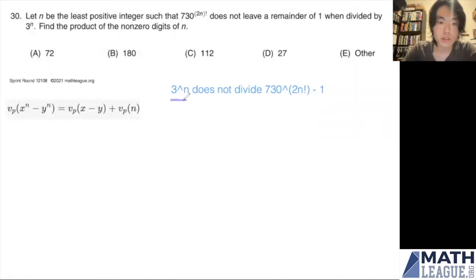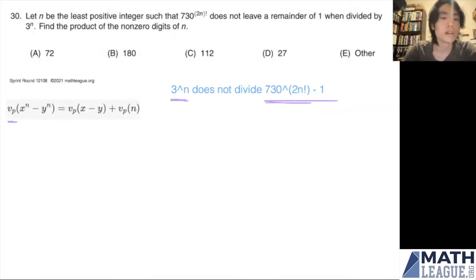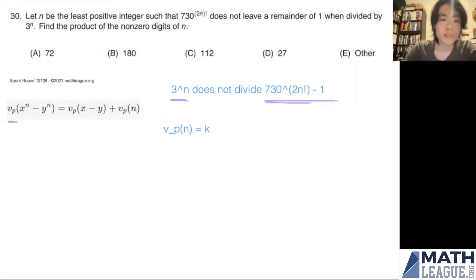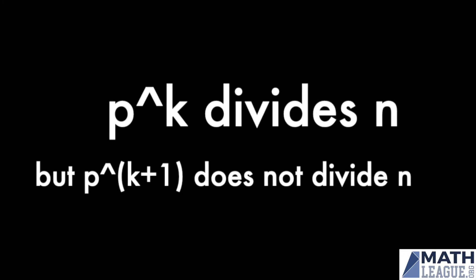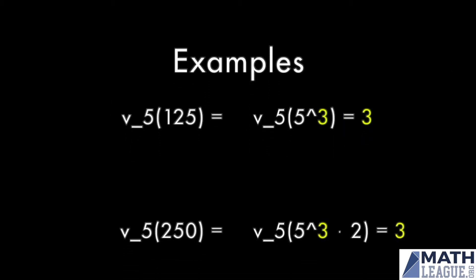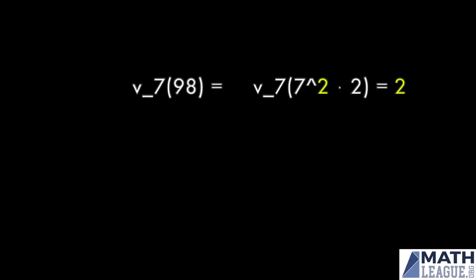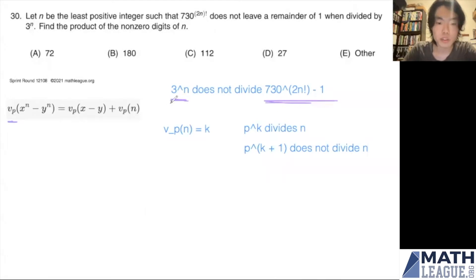Since 3^n only contains factors of 3, we only need to consider factors of 3 on the right side. We'll use the notation v_p, which describes the number of occurrences of a prime factor p in the prime factorization of a number n. So v_p(n) = k means p^k divides n but p^(k+1) does not. For example, v_5(125) = 3, v_5(250) = 3, and v_7(98) = 2. Since 3 is the prime of concern, we'll use p = 3 and denote this function v_3.